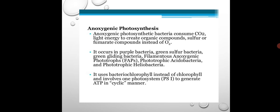Anoxygenic photosynthesis uses bacteriochlorophyll instead of normal chlorophyll and involves one photosystem — Photosystem I — to generate ATP in a cyclic manner. I recommend all students to watch the Part 1 video on oxygenic photosynthesis so there will be a comparative study between these two types: oxygenic and anoxygenic photosynthesis.